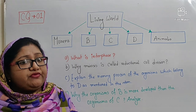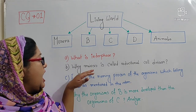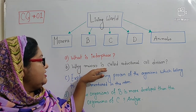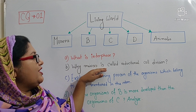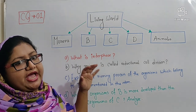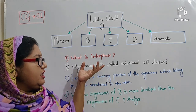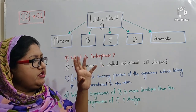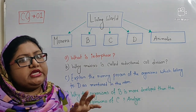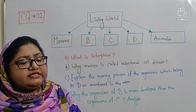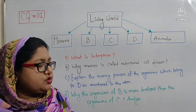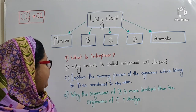So students, I think it is clear to all of you how you will write down the answer of a comprehensive question. You have to answer in two paragraphs — in the first paragraph you will give the definition, then in the second paragraph you will write the causes, why it is known as such.